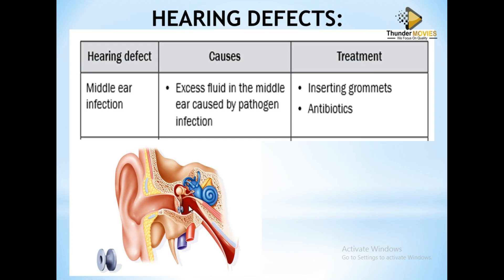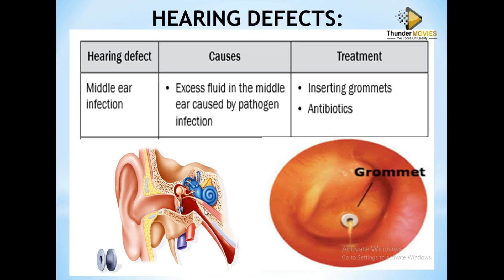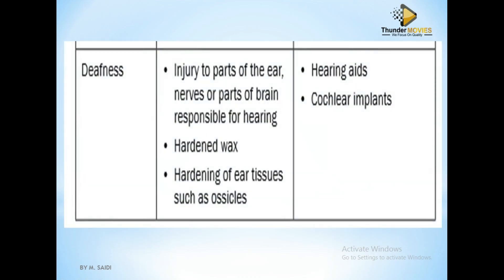This is the structure of a grommet. The fluid builds up here due to infection — it could be because you don't clean your ears, or just bacteria that has entered the ear. I advise you to keep your ears clean. They cut here and insert the grommet inside. Once inserted, it looks like this on the tympanic membrane — the eardrum — with the grommet in place. Because the pus is inside, it will now come out through the grommet so that the pressure does not build up and cause too much pain.